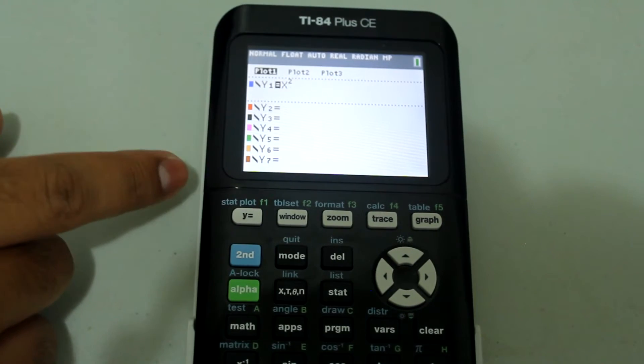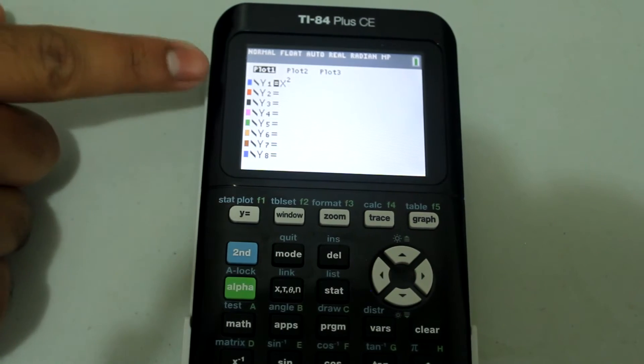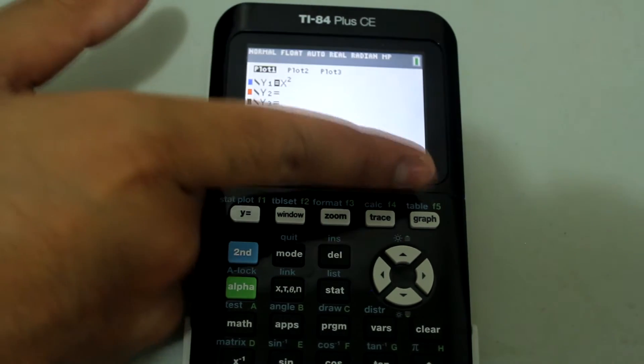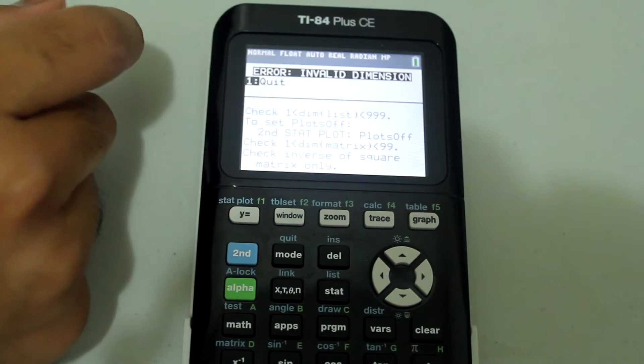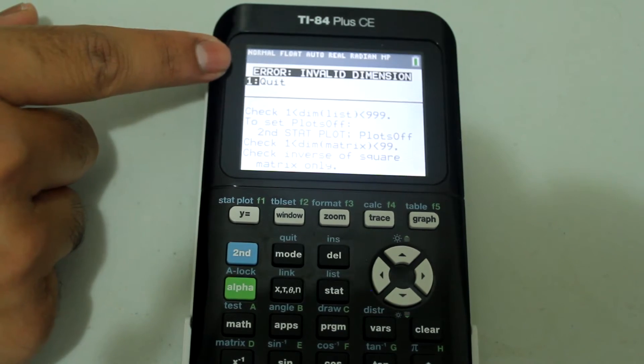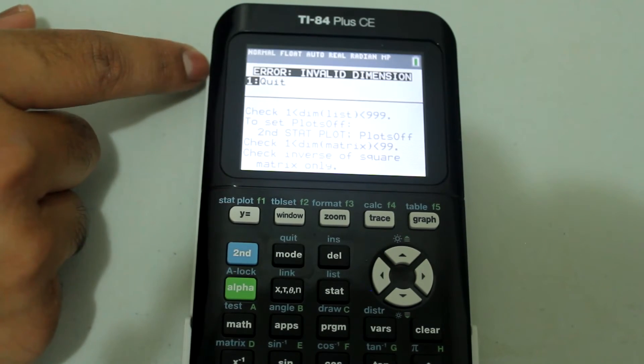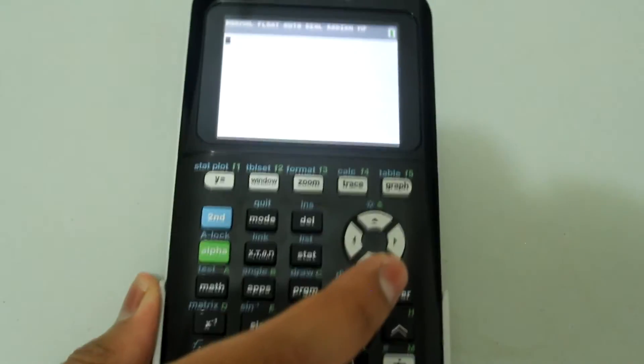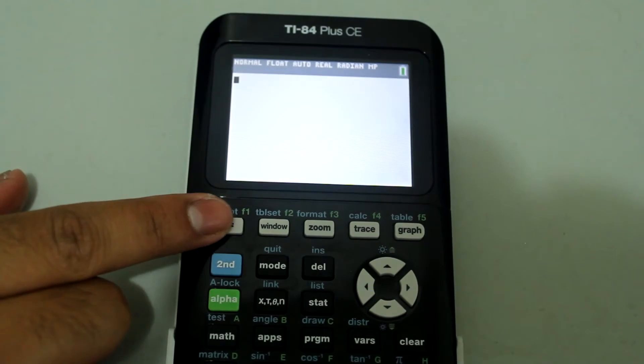If I press the y equals button, as of right now you'll see that I have y1 equals x squared. If I press graph, you'll see that I receive an error message that says error invalid dimension. Press enter to quit. Now, once again, let's press y equals.